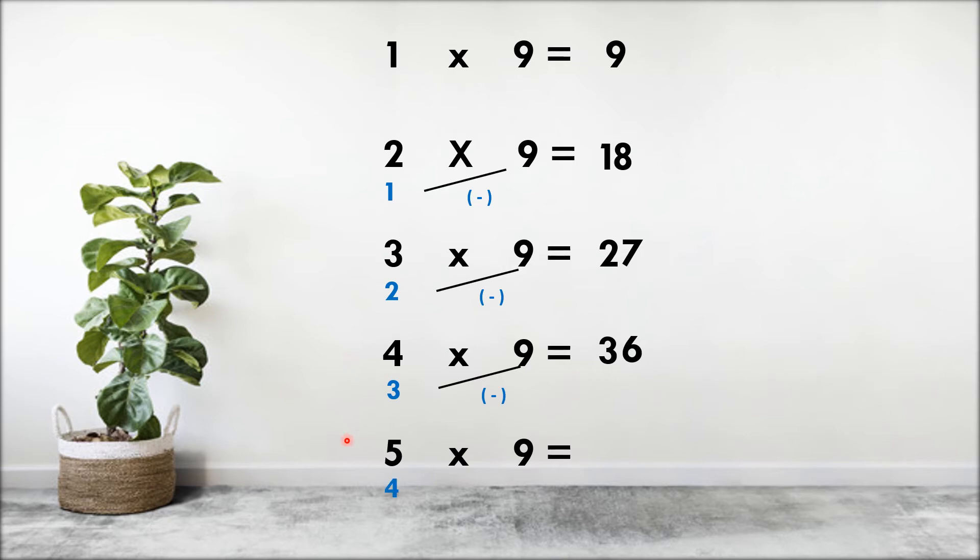Predecessor of 5 is 4, and 9 minus 4 is 5, so the answer is 45. We all know 10 into 9 is 90. Did you notice that? If you see the answers for the 9 tables, if you add the digits, we will be getting 9.